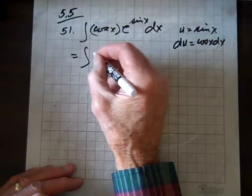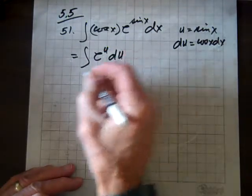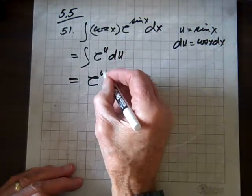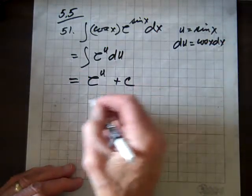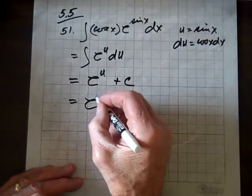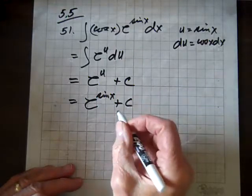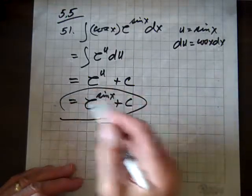We've got the integral of e to the u du, which equals e to the u plus C, which equals e to the sine x plus C. And we're done.